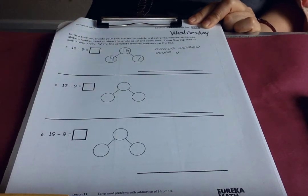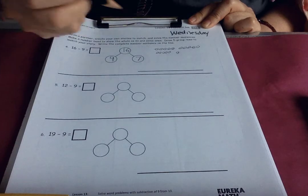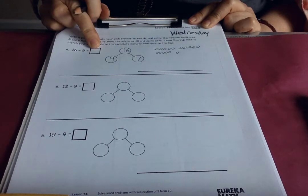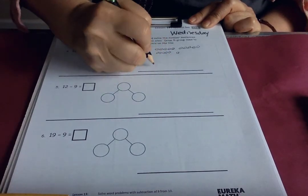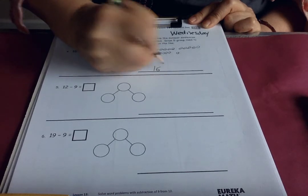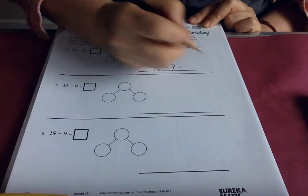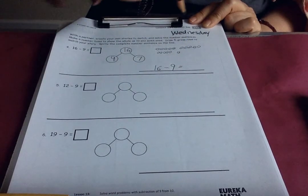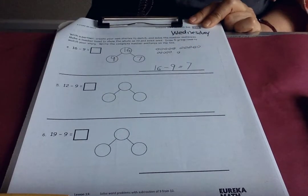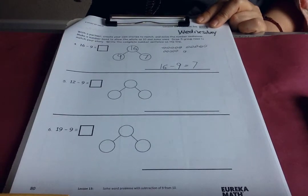And we can write the complete number sentence on the line. You could write the answer here, but they want you to write out the whole sentence. Sixteen take away nine equals seven. Lots of ways to think about how to do this problem.